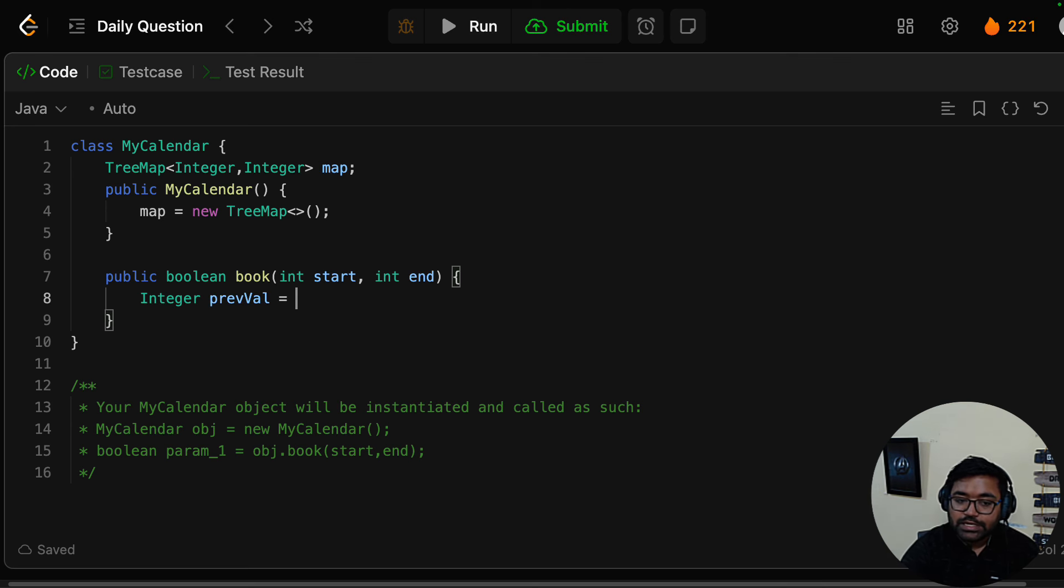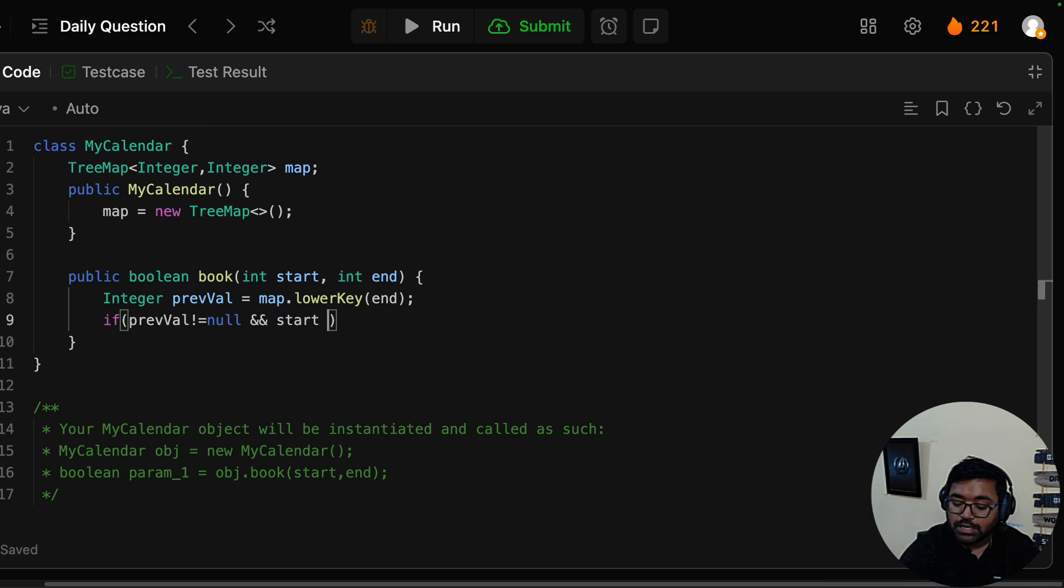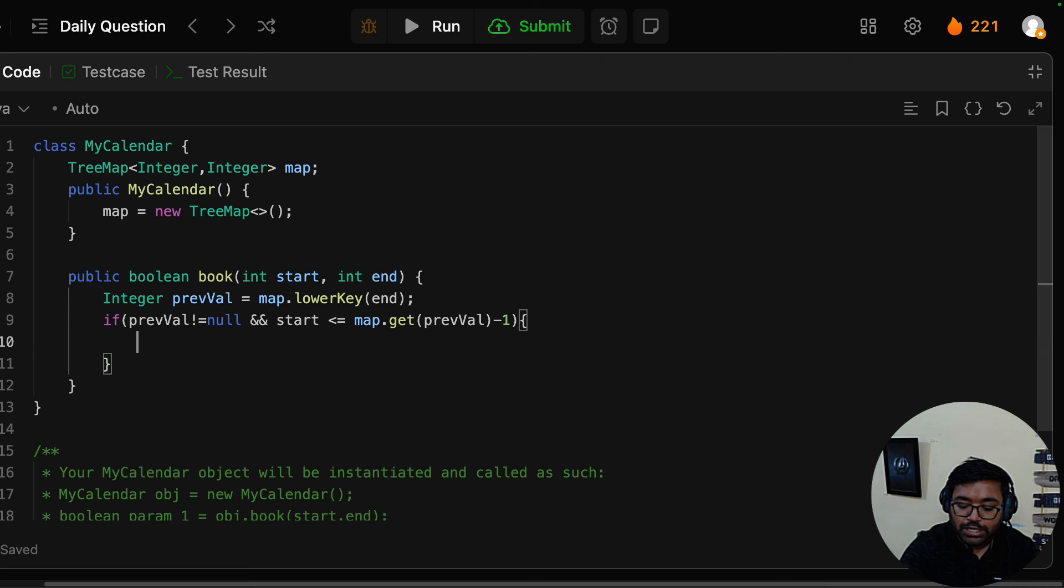In the book function, we call Integer previousValue equals map.lowerKey and pass end to find the previous value. Now check the overlap case: if previous value exists, previousValue is not equal to null, and start is less than or equal to map.get(previousValue), then you have overlap so return false.